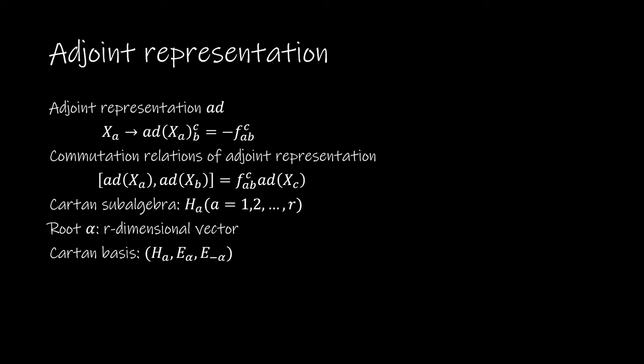We can choose a maximum number of elements from sets of mutually commutative elements and let H be the element. H is called the Cartan subalgebra, and R is the rank of the Lie algebra.